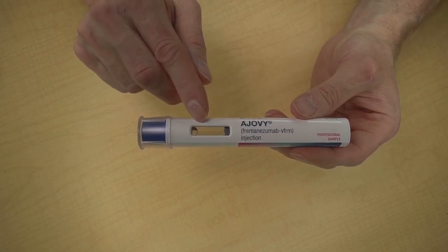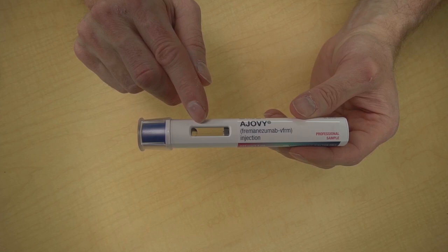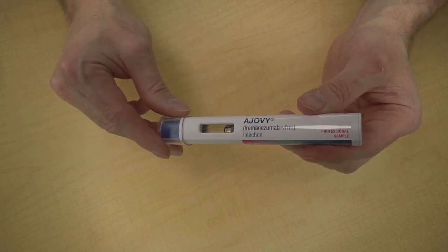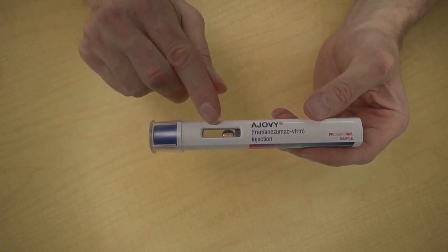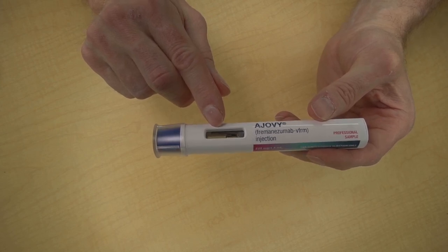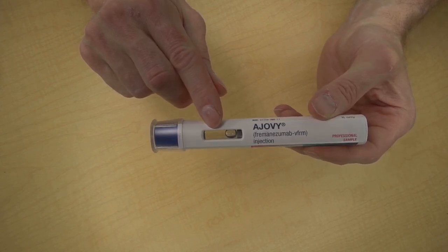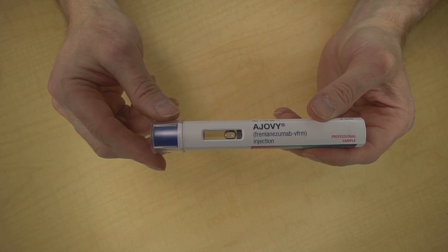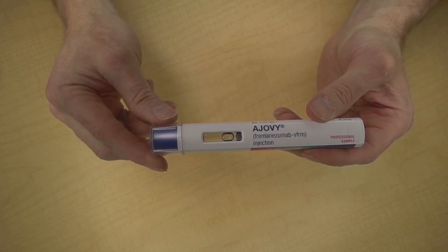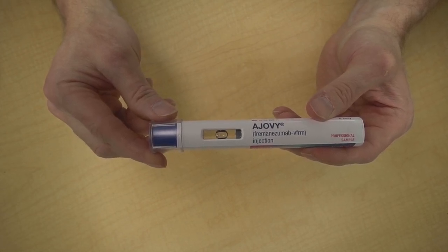Looking inside the viewing window, the Ajovi should look clear or slightly yellow. It's okay if there's a bubble. But if the Ajovi looks cloudy, if the glass looks broken, or if you see anything floating in there other than a bubble, call the pharmacy or Ajovi at 1-800-887-8100 to get a replacement.